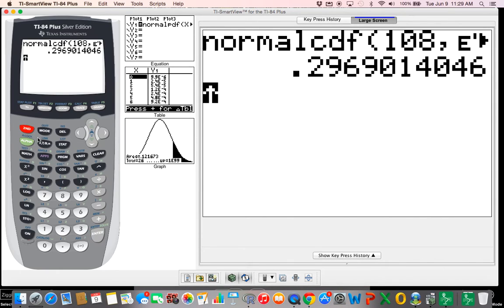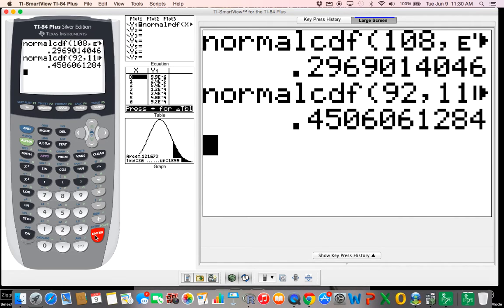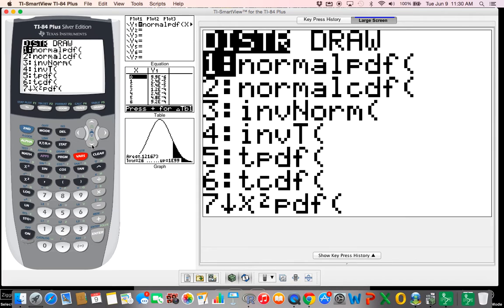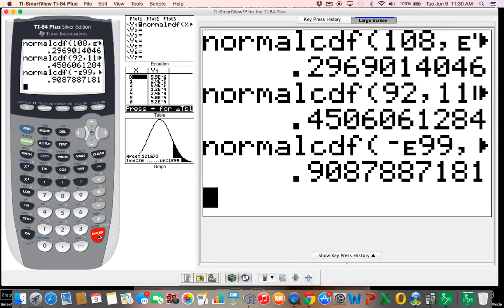The next problem we want is between 92 and 110. So the answer here is 0.4506. The next question is below 120. So below 120, our lower bound is going to be negative E99, go up to 120, paste it and work it. So we're 0.9088.